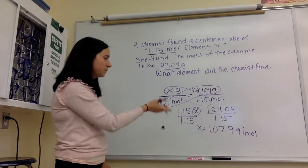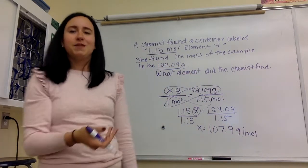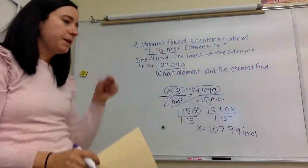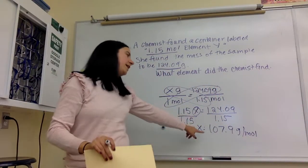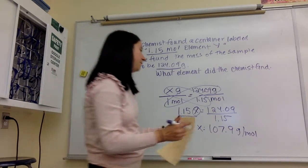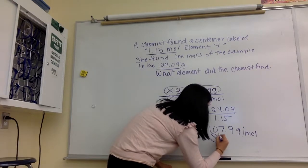Well, the question, okay, so that's great, I found the molar mass. But the question is asking me, what elements did this chemist find? So to figure that out, I need to look at my periodic table and find what element has a mass closest to 107.9. And when I look at my periodic table, I find that it is silver.